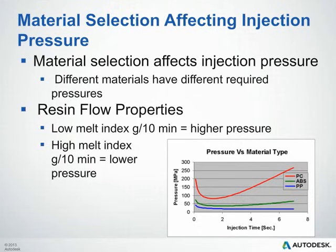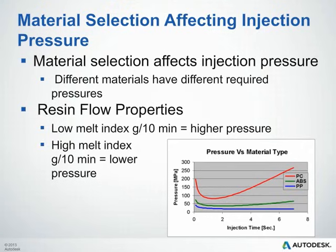One way to compare grades and materials is by using the MFR number — the melt flow rate. This number is not used by the solver, but gives an indication of relative viscosity. A low melt index, say 5 grams per 10 minutes, typically indicates a higher viscosity material requiring higher pressures to fill. A higher melt index, say 10 grams per 10 minutes, typically indicates a lower viscosity material requiring lower pressures. This simplifies the flow properties of a polymer — it is a quick estimate, so keep that in mind.